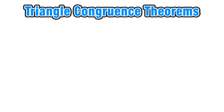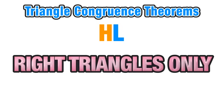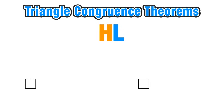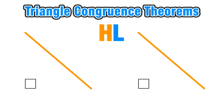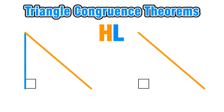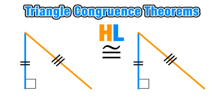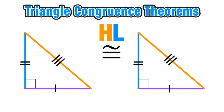Our final congruence theorem is a special case called hypotenuse-leg, and it applies to right triangles only. We start with the key feature of any right triangle: the right angle. The hypotenuse of a right triangle is its longest side and is always opposite the right angle. This theorem says that if the hypotenuses in both right triangles are congruent, and if a leg — one of the other sides — is also congruent, then that is enough to say that the two triangles are congruent, meaning all corresponding sides and angles have the same measure.